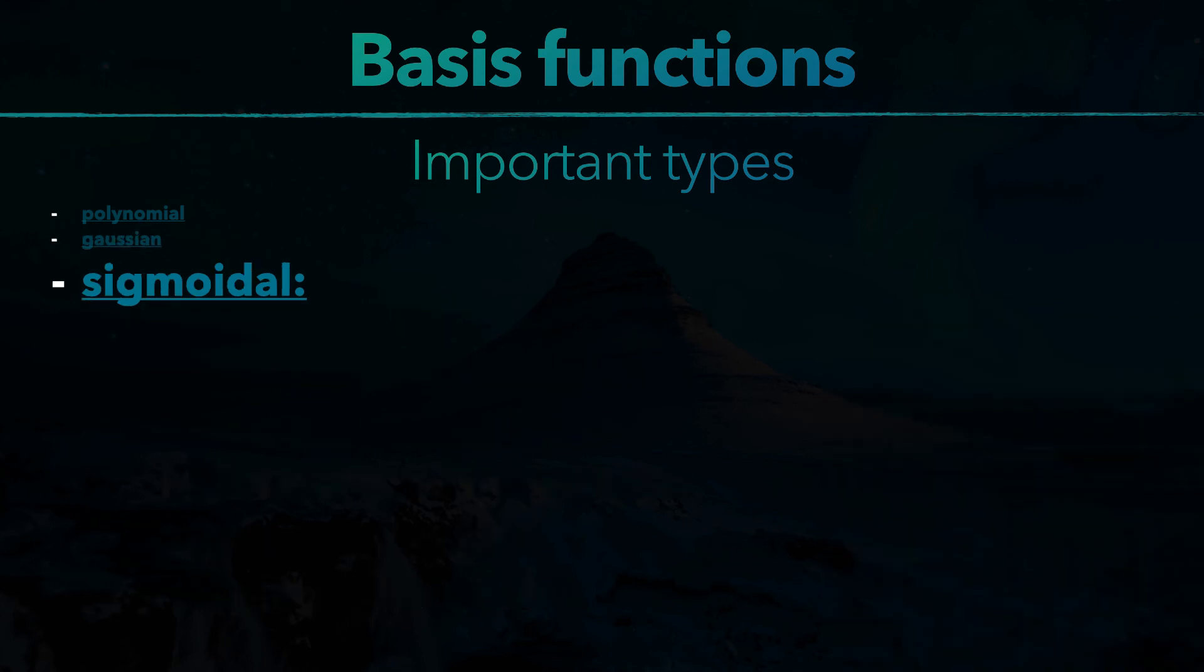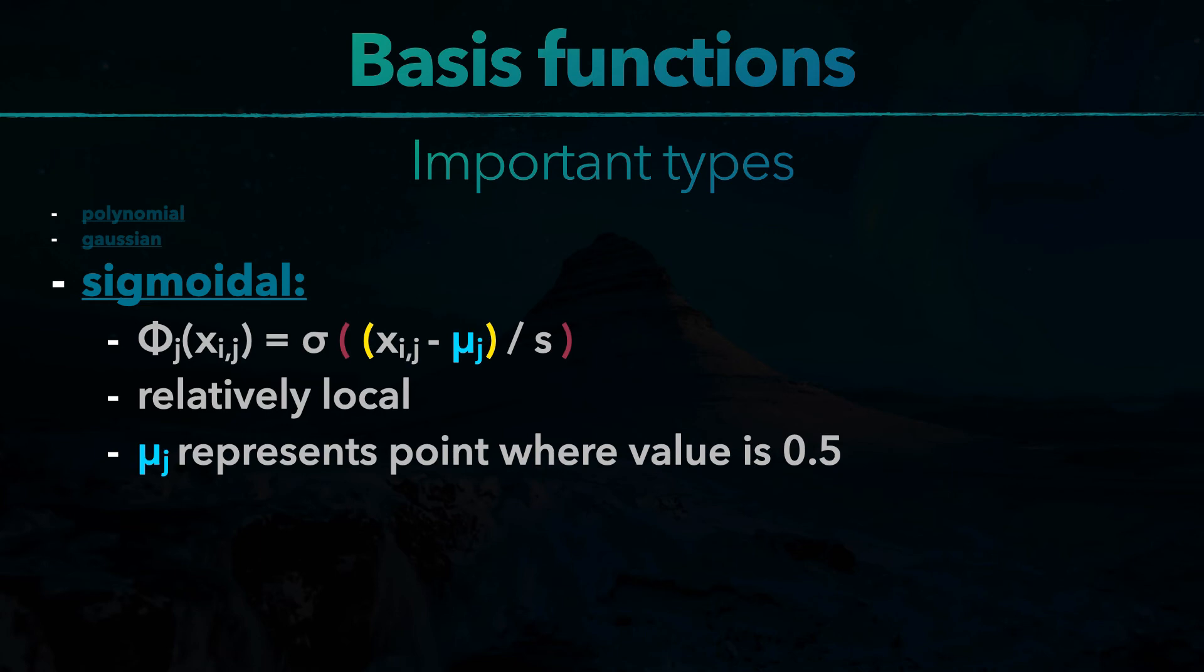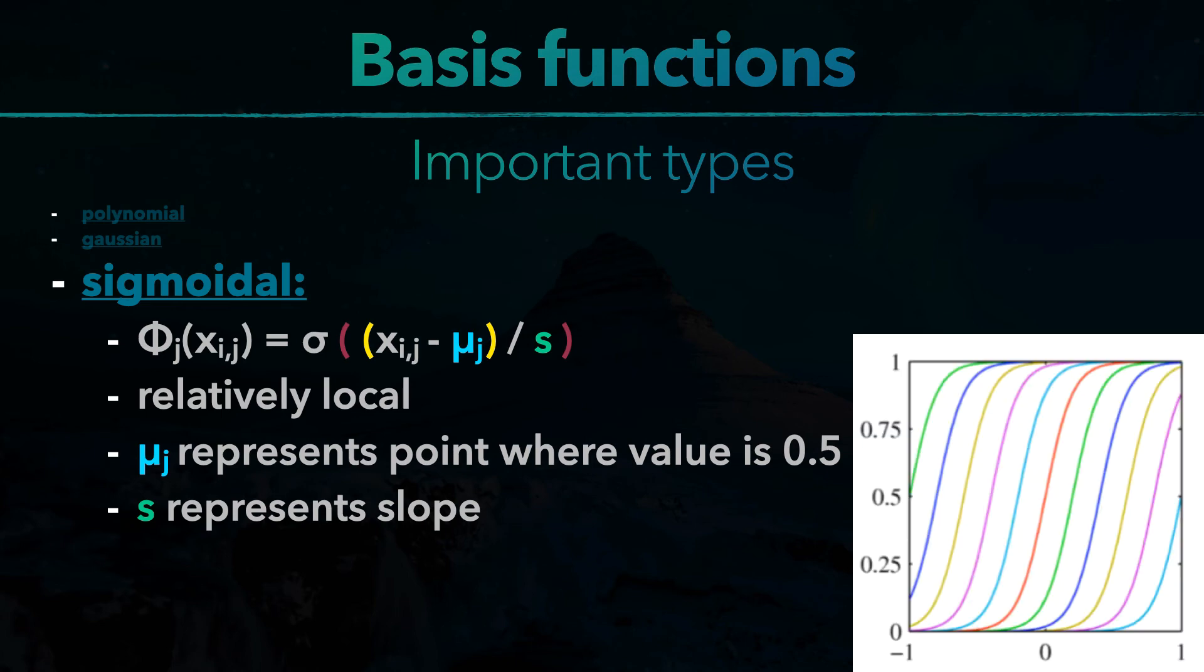Next in line are the sigmoidal basis functions. They have this form and they are also relatively local and easy to use, because mu j represents the point where the function has the value 0.5 and s represents the slope. They look like this.